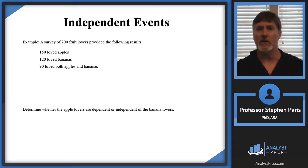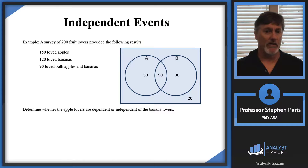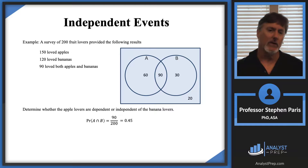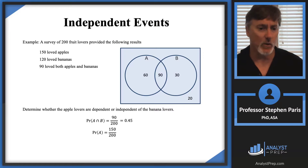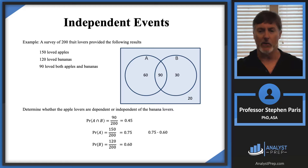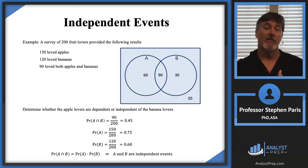So I go through the process and set up the Venn diagram. We work from the inside out — starting with the 90 people that love both bananas and apples, then 60 more love apples but not bananas, getting me to the 150, and so forth. I've got three probabilities to calculate. The probability of A intersect B is 90 out of 200, which is 0.45. The probability of A is 150 out of 200, so that's 0.75. The probability of B is 120 out of 200, so that's 0.6. And when I multiply 0.75 times 0.6, I get 0.45. In other words, the probability of A intersect B equals the probability of A times the probability of B, and that tells me that the events are independent events.